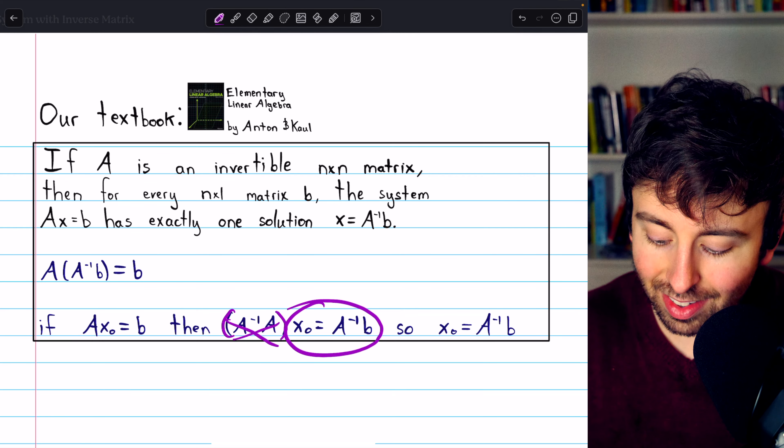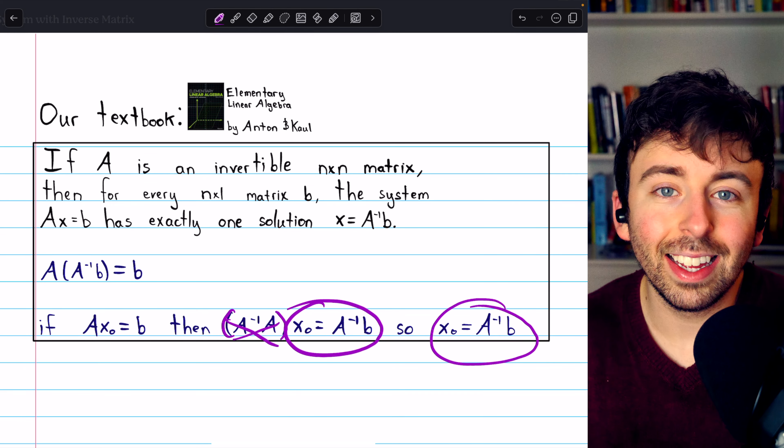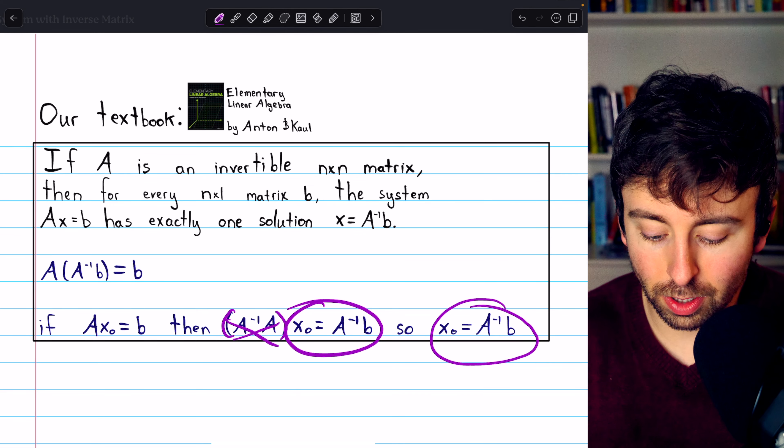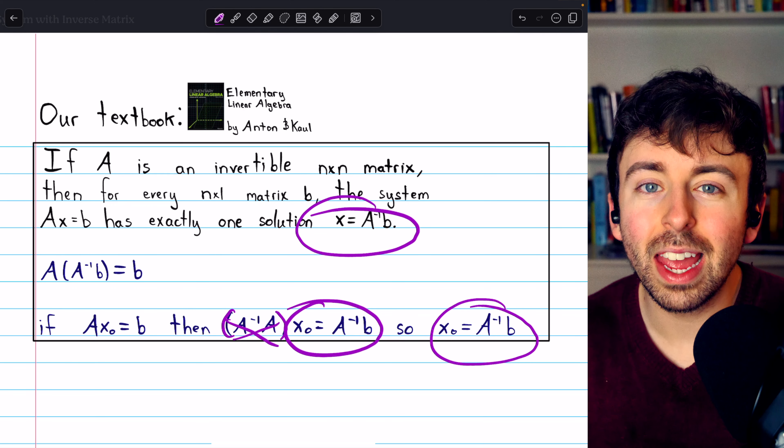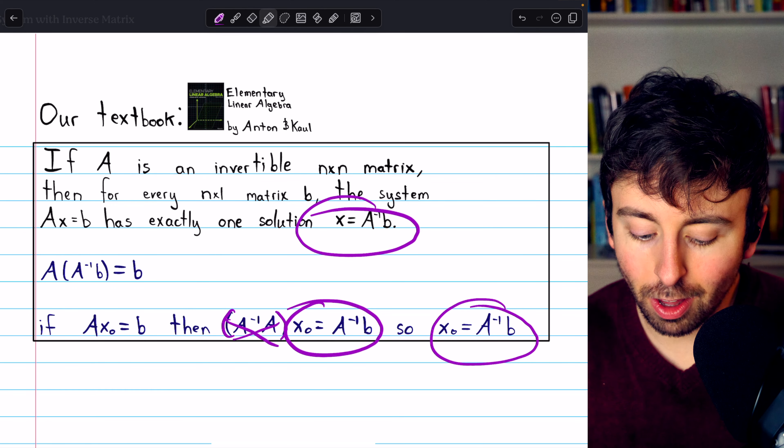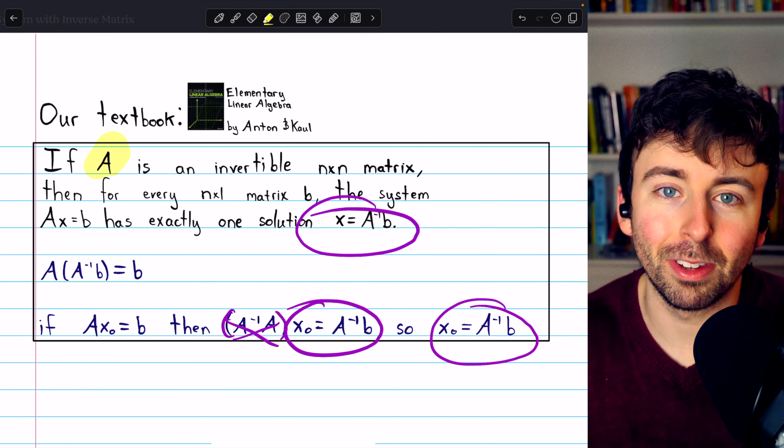So yes, if we have a solution, it's got to be A inverse B, and A inverse B is a solution. So there's exactly one solution to such a system, and that's what it looks like, as long as our matrix A is invertible.